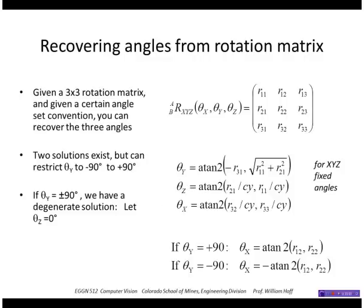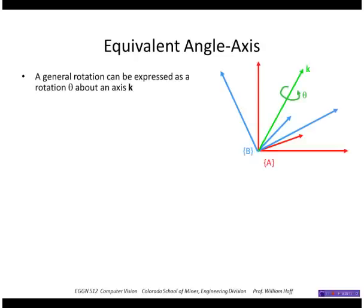One final convention for representing rotations that I'll talk about is the angle-axis. So we can express any rotation as a rotation by angle theta about some axis, some unit vector k. And the Craig book derives the form of the rotation matrix given a unit vector k and an angle theta.